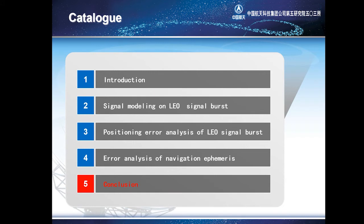Finally, the conclusion. In this paper, we focus on the LEO signal burst. First, the mathematical model is proposed. Then the estimation errors of the LEO navigation signal, including Doppler error and pseudo-range error, are derived. Finally, the positioning performance of a large-scale LEO constellation is analyzed with numerical simulation. Many conclusions of this paper are drawn below.